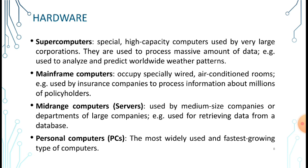Supercomputers are special high-capacity computers, high in memory, used by very large corporations such as Google, Yahoo, and NASA. They are used to process massive amounts of data. The next type is mainframe computers, which occupy specially wired, air-conditioned rooms and are used by insurance companies to process information about millions of policyholders.